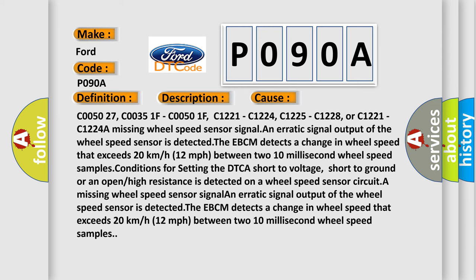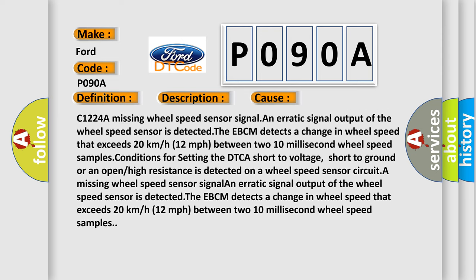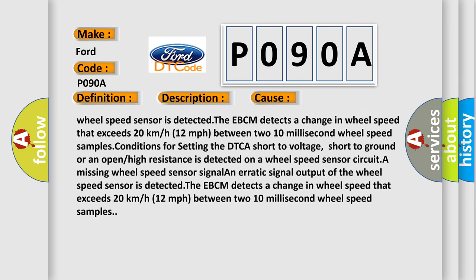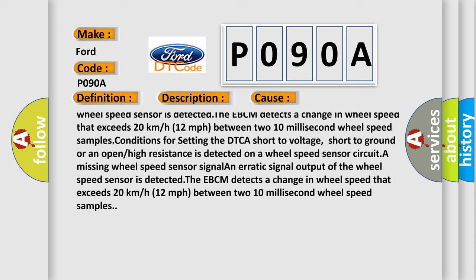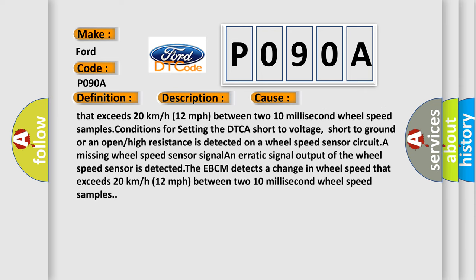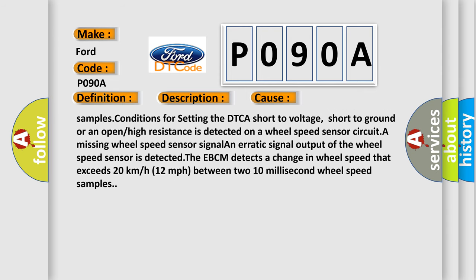C1221, C1224, C1225, C1228, or C1221, C1224. A missing wheel speed sensor signal or an erratic signal output of the wheel speed sensor is detected.